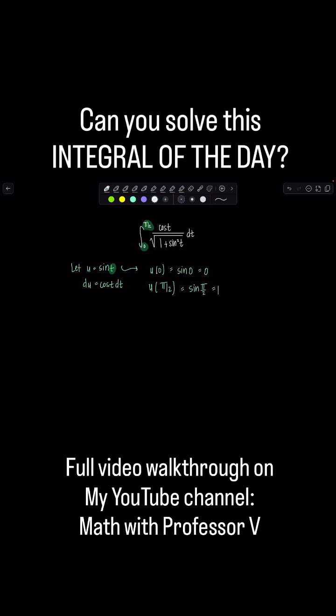So now let's rewrite our integral entirely in terms of u. We'll go from 0 to 1 and then this is lovely right here. This cosine t dt that's just du, beautiful, over square root and then this is 1 plus u squared.